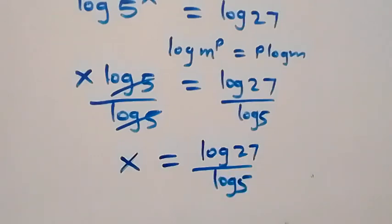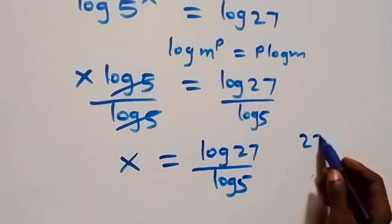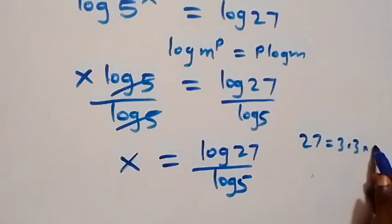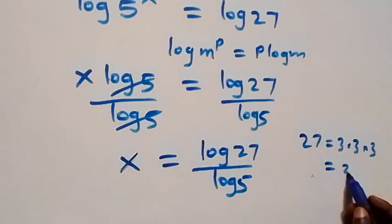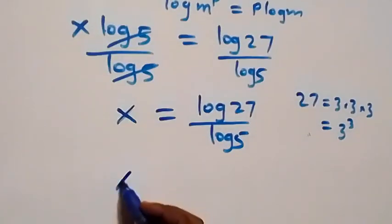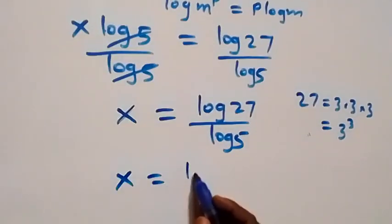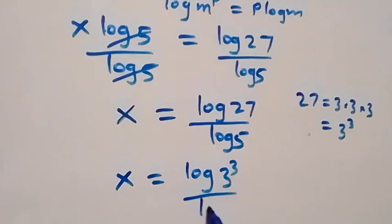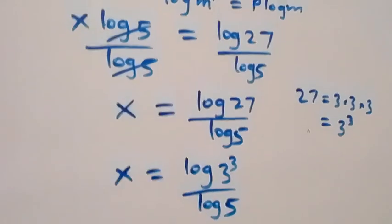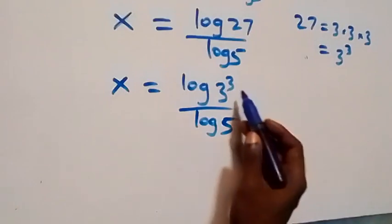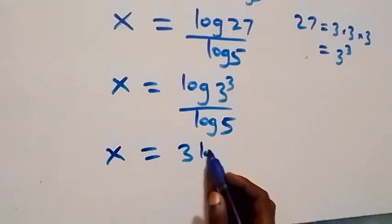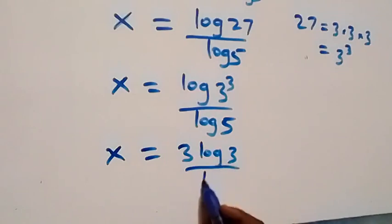From here we can simplify: 27 is the same as 3 times 3 times 3, which equals 3 raised to power 3. So we have x equals log of 3 raised to power 3 over log 5. Applying the power rule of logarithms again, the 3 comes out in front, giving x equals 3 log 3 over log 5.